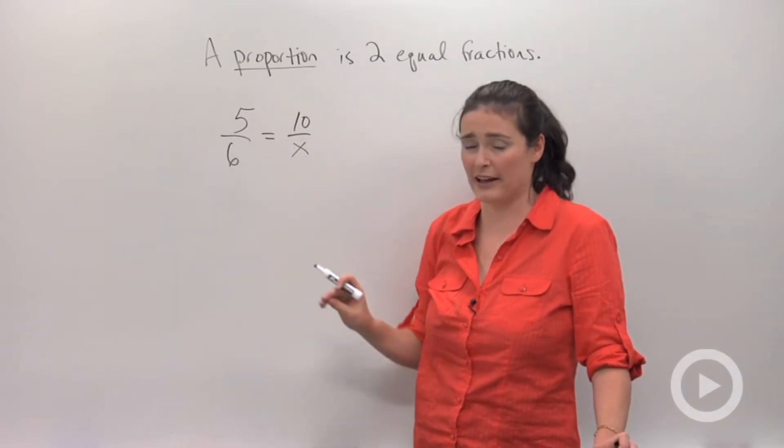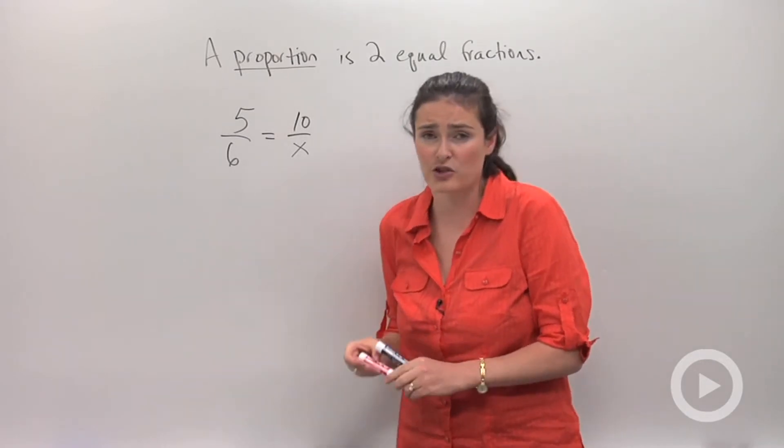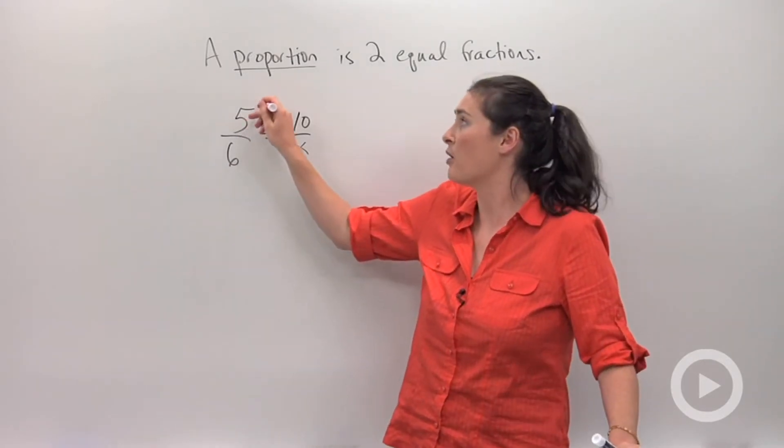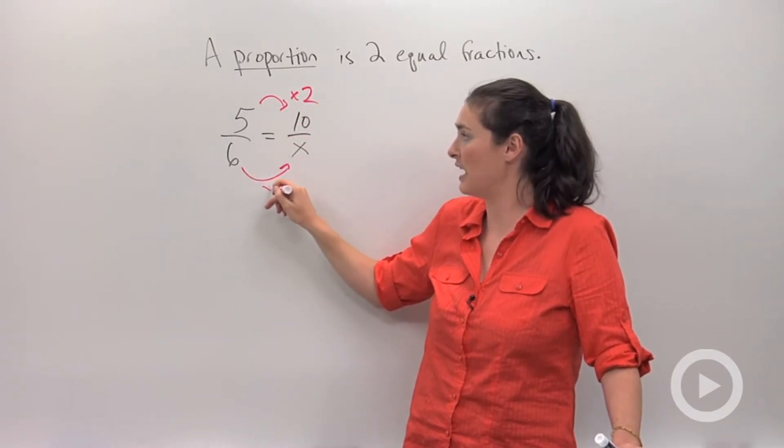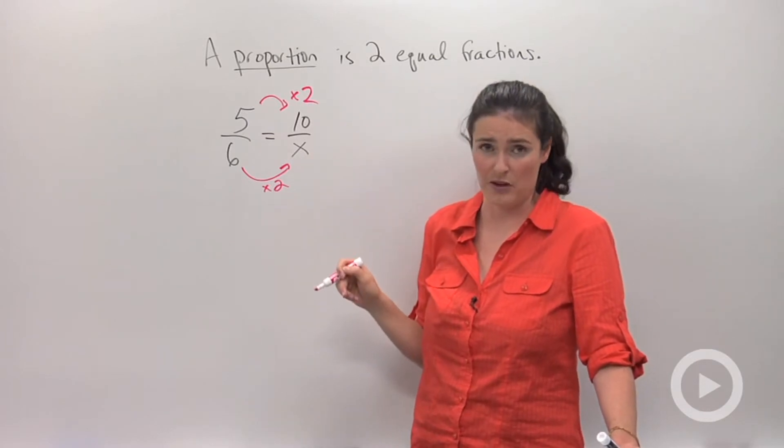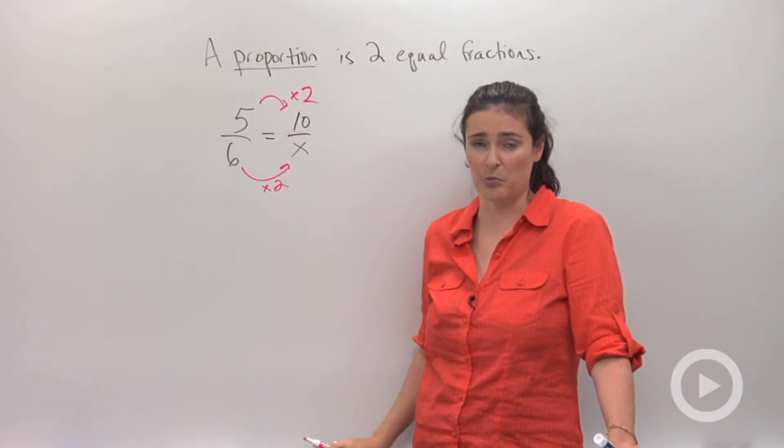So when you're given a problem like this, there's a couple different ways to solve. The first way is the way I just described to you, where you think about how 5 times 2 gave you the answer 10, so 6 times 2 would have given me that 12. That's one way to think about it, is to look for what number you're multiplying by.